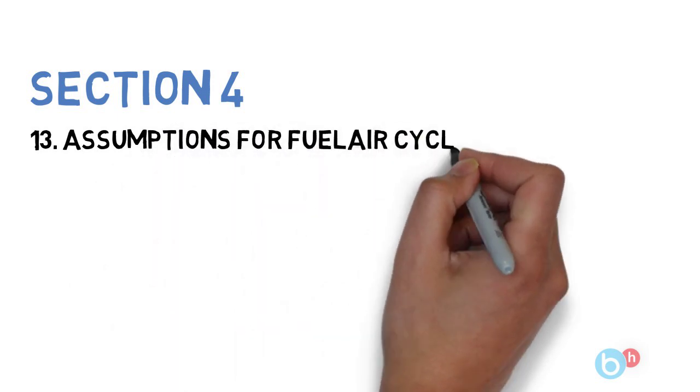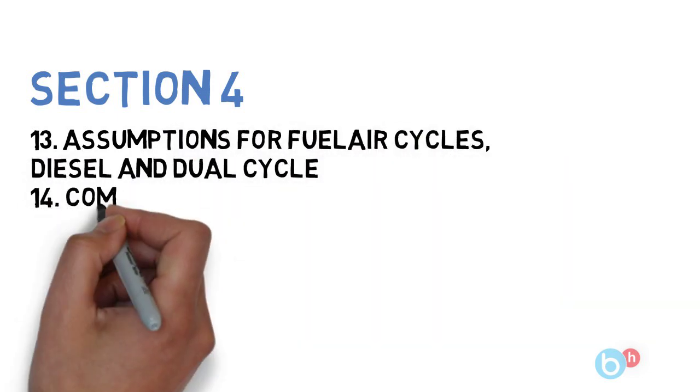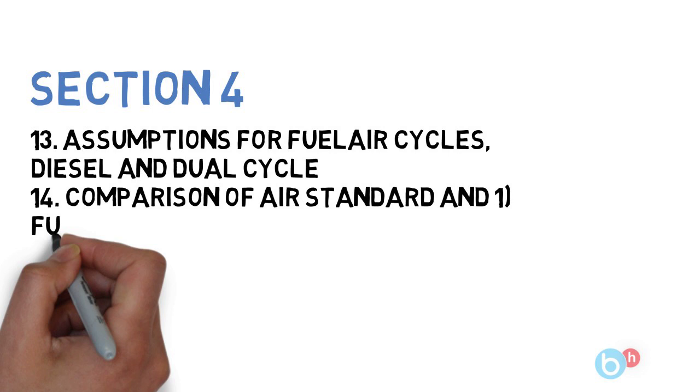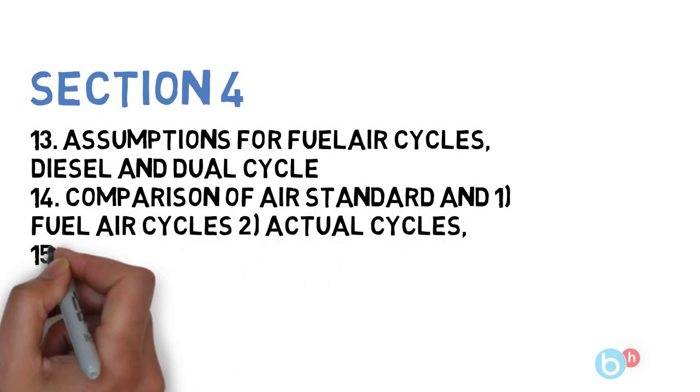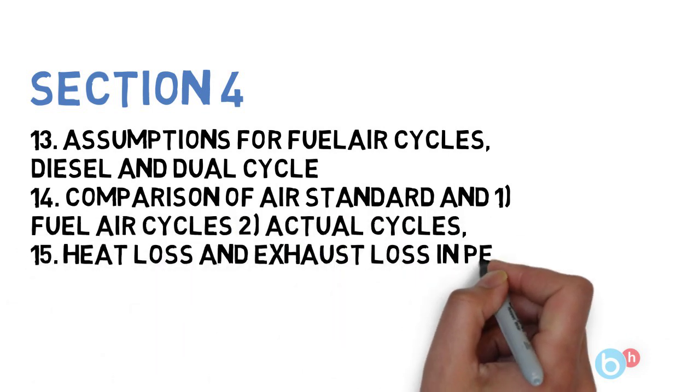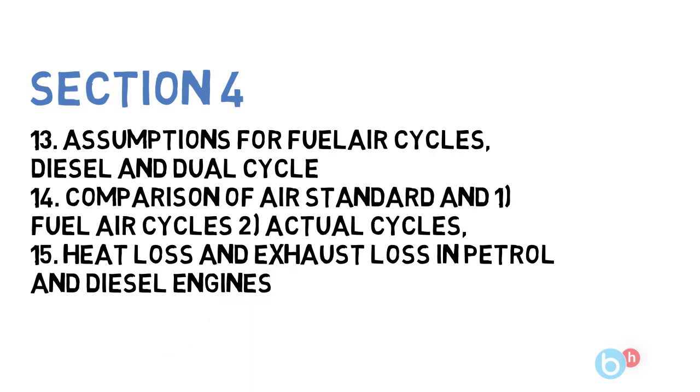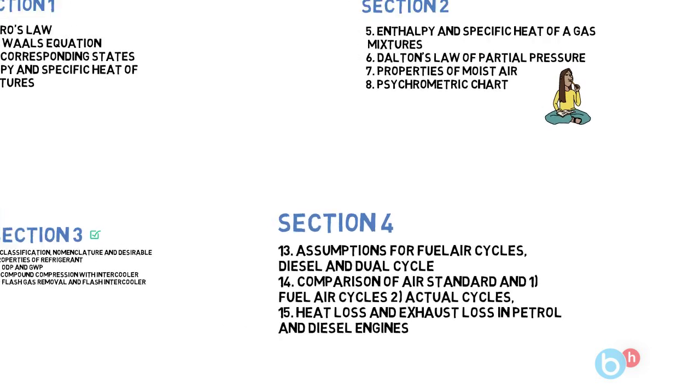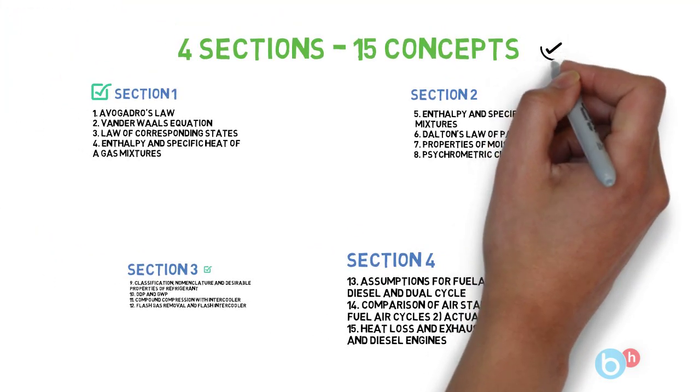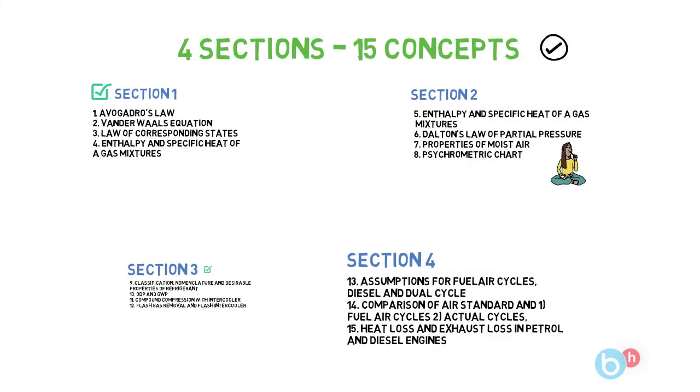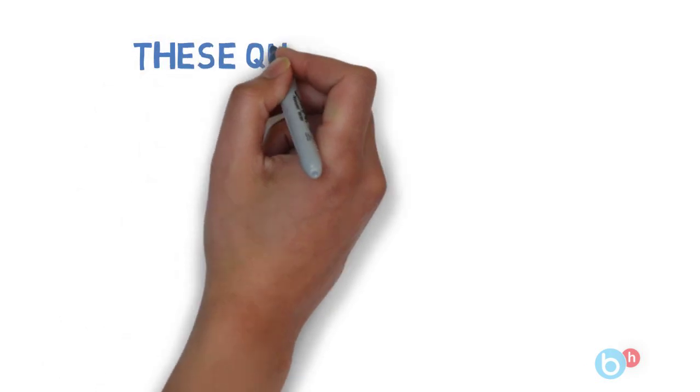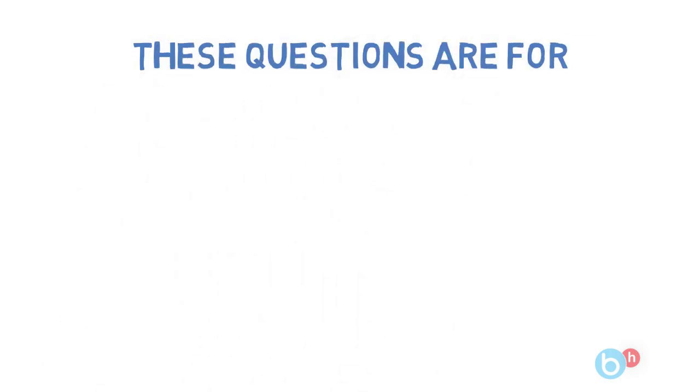Next you will have to do only 3 concepts because our 15 concepts are last 3. They are Diesel and Dual Cycle, next is Comparison of Air Standard and Fuel Air Cycles or Actual Cycles. So this is the 14th question and the last question is Heat Lost and Exhaust Heat in Petrol and Diesel Engines. So guys, these are the 15 questions that you need to do and this will help you if you cover these topics.